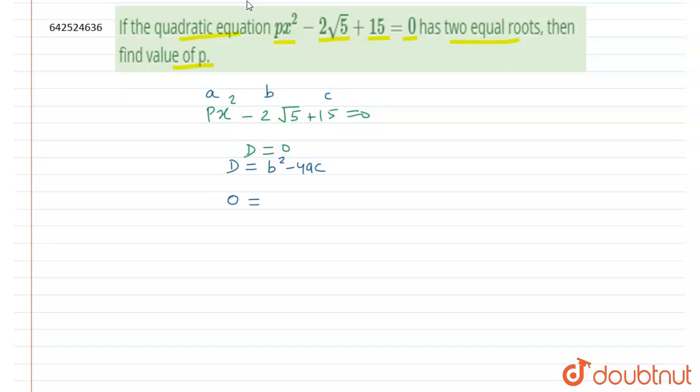So D value given to us will be 0. b will be equal to -2√5 whole square minus 4 into p into c will be equal to 15.